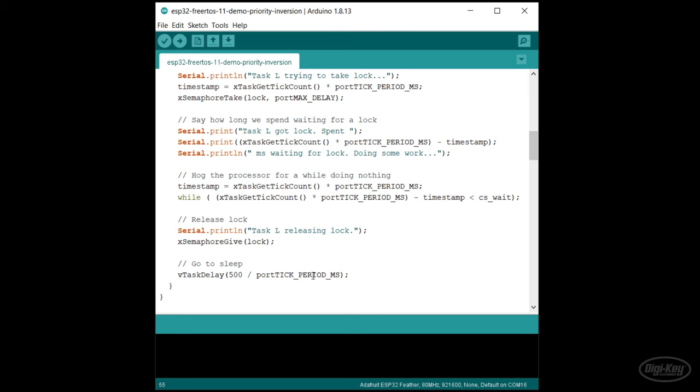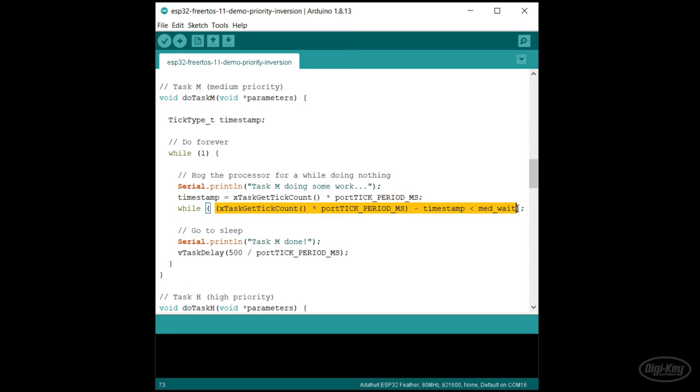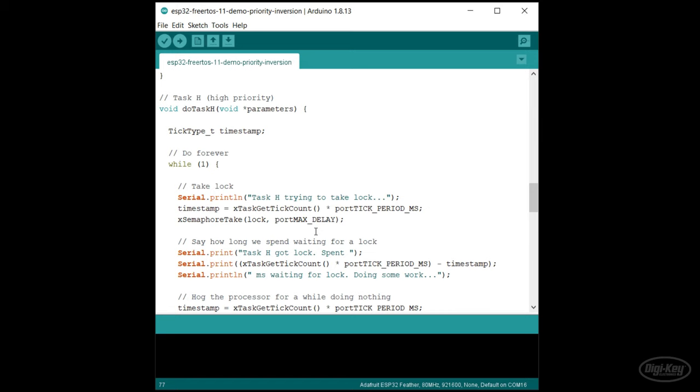A medium-priority task is also defined that hogs the processor for about 5 seconds. Note that I'm using a while loop here to avoid yielding the processor. It then sleeps for half a second. There's also a high-priority task that works just like the low-priority task. The high-priority task and low-priority task can block each other if one grabs the lock first.